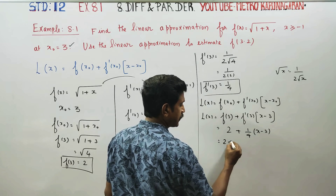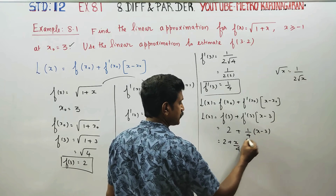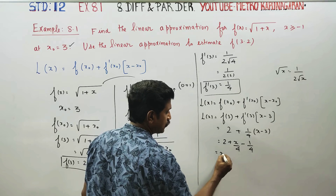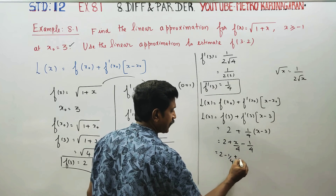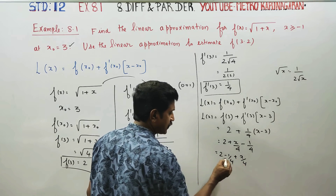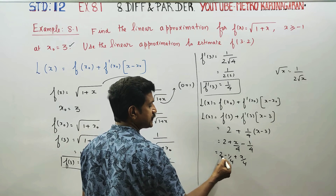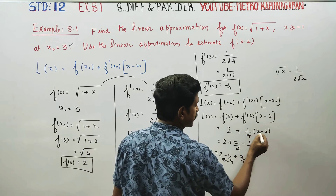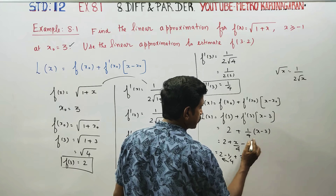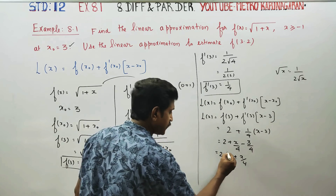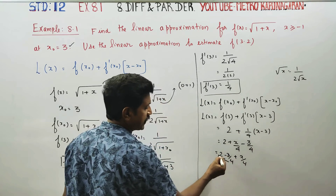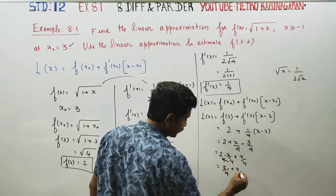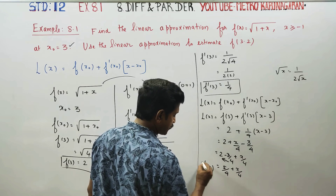Substituting: 2 + (1/4)(x − 3). Simplifying: 2 − 3/4 + x/4. Taking LCM 4: (8 − 3)/4 + x/4 = 5/4 + x/4. This is the linear approximation of x.